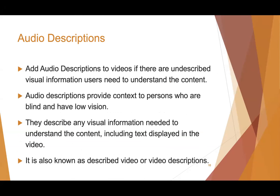Once the video has captions, you need to add audio descriptions. You need to add audio descriptions to videos if there is undescribed visual information that users need to understand the content. They provide context to persons who are blind or have low vision and describe any visual information needed to understand the content, including text displayed in the video. For example, in a movie where they're driving into town and it shows a population sign — especially in a horror movie — that's something that should be described. This is also known as described video or video descriptions.